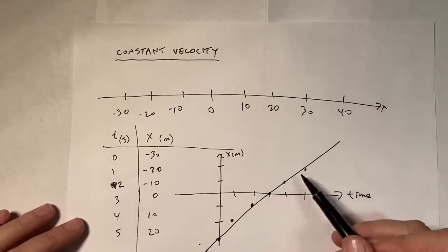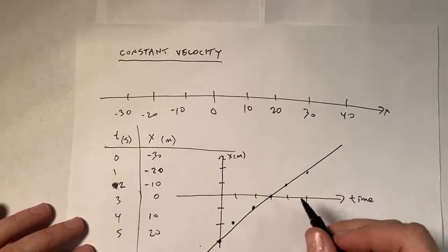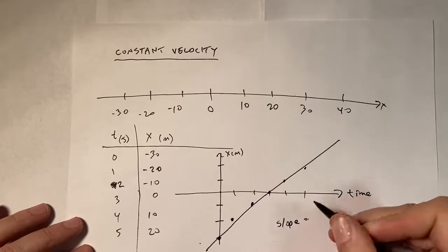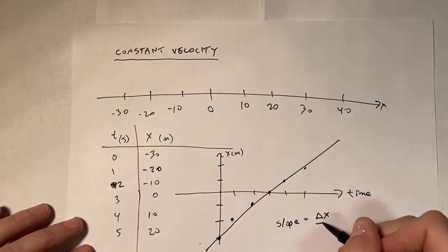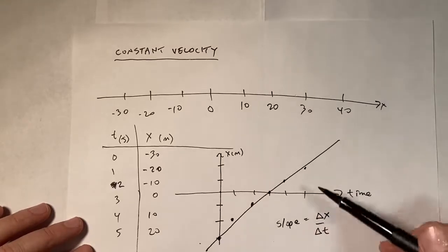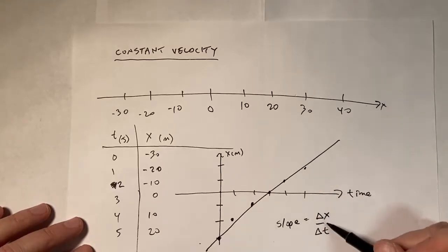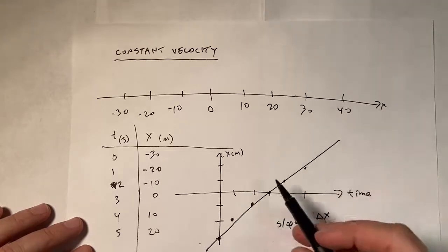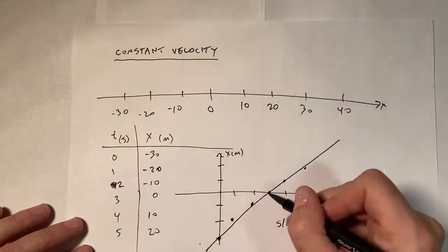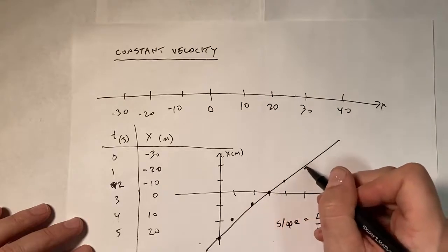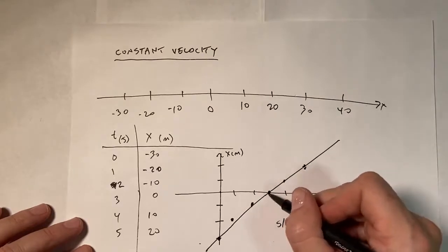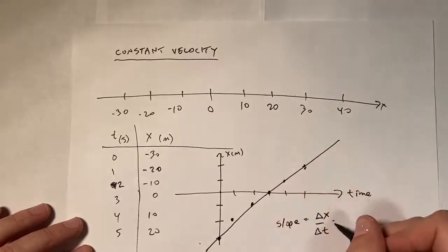And so you can see it's a straight line. It has a slope, which would be the change in x over the change in time, because it's rise over run. So in physics, we write this as delta as the change in. So that means I could take any two points in this graph. Let's take this one and that one. I'm going to use those two points to find the slope.